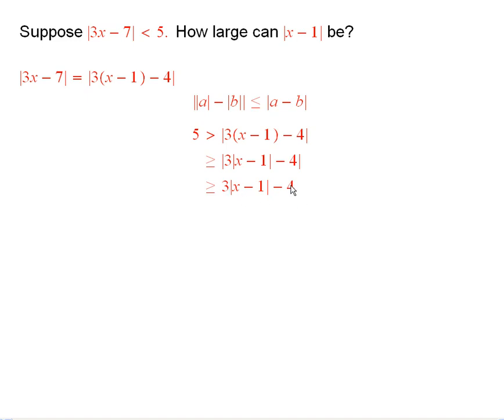So, now I'll add 4 to both sides. And then that says that 9 is bigger than or equal to 3 times absolute value of x minus 1.